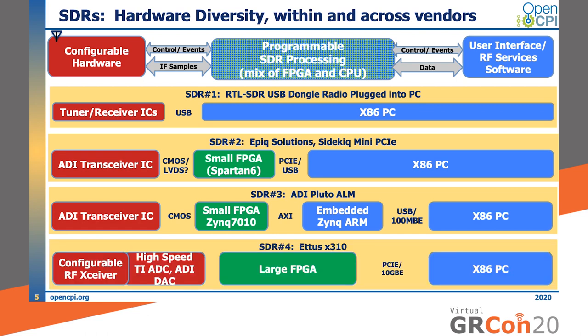Our final example is the USRP X310 radio, a powerful member of ETTUS's broad product line. The front end is a powerful combination of RF transceivers and higher-speed ADCs and DACs for higher-speed sampling. There's a large FPGA, and this radio is attached to the host PC via PCI Express or 10-Gigabit Ethernet. There is a lot of capacity for processing in the large FPGA and a high-performance, high-bandwidth connection to the host PC, so a lot of processing can happen in the FPGA with perhaps less being required in the host PC.